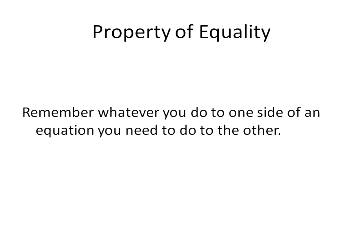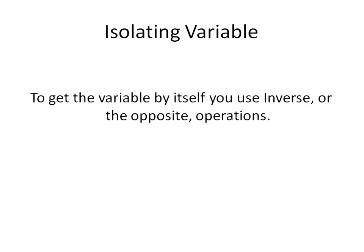Things you'll need to remember: you'll need to remember the property of equality. Whatever you do to one side of an equation, you need to do to the other side of an equation. And you'll also need to know this vocabulary, isolating a variable. When you isolate a variable, you're getting the variable completely by itself on one side of the equation.